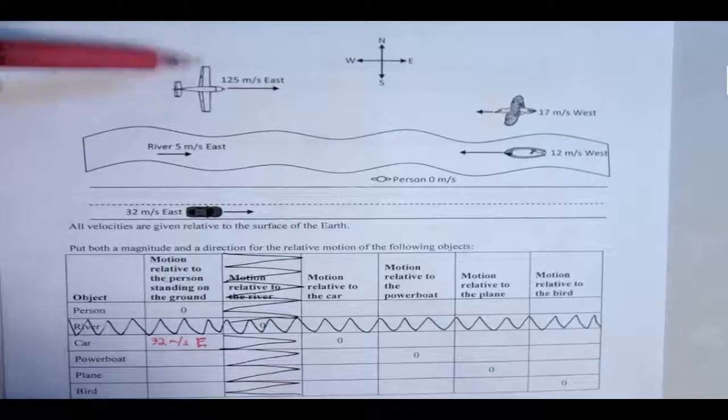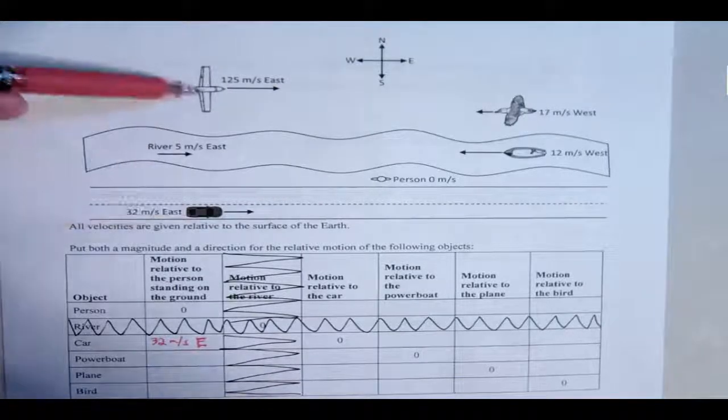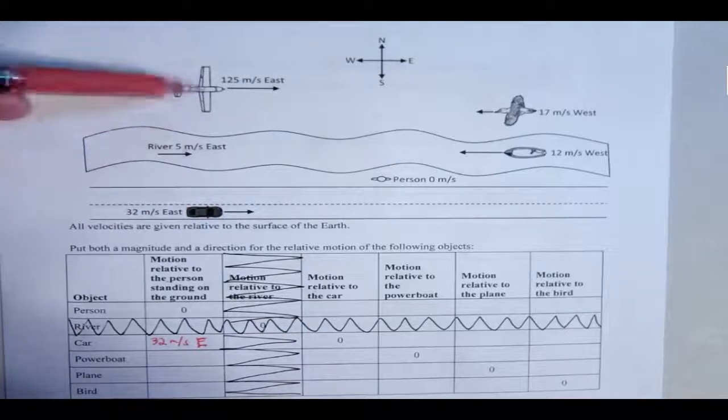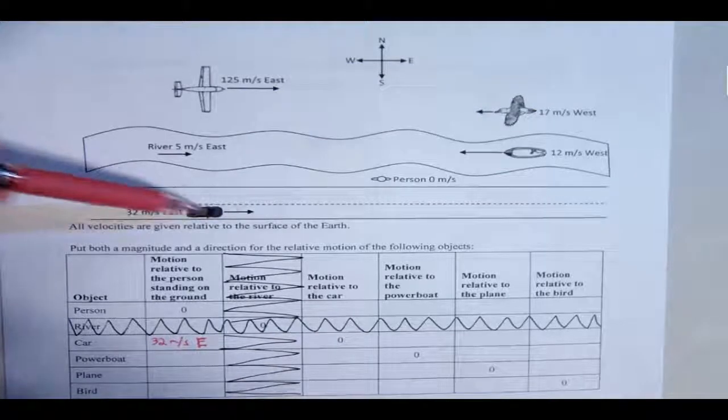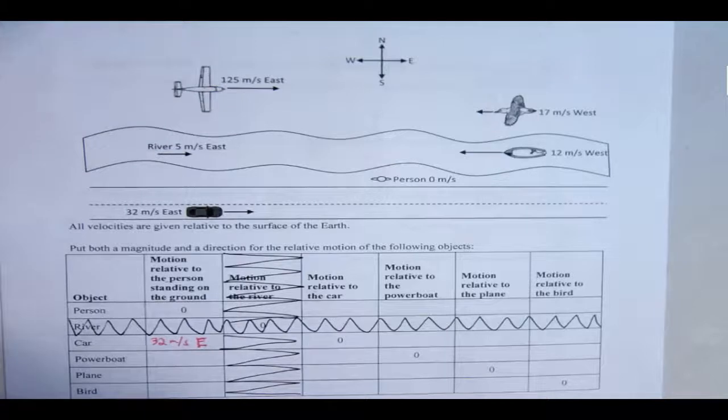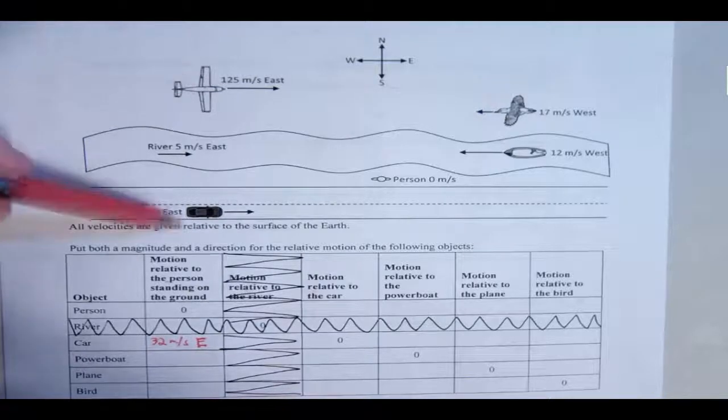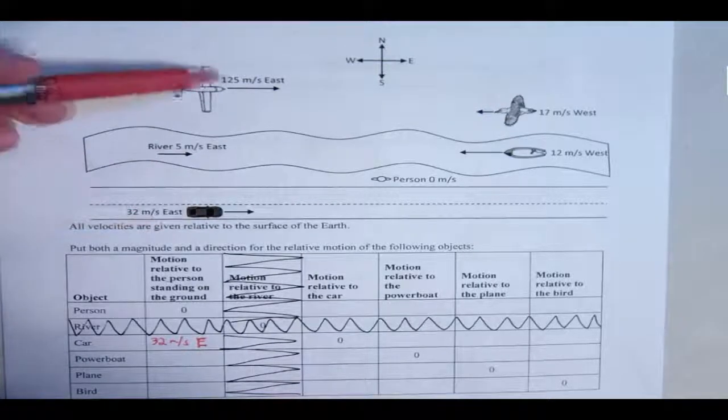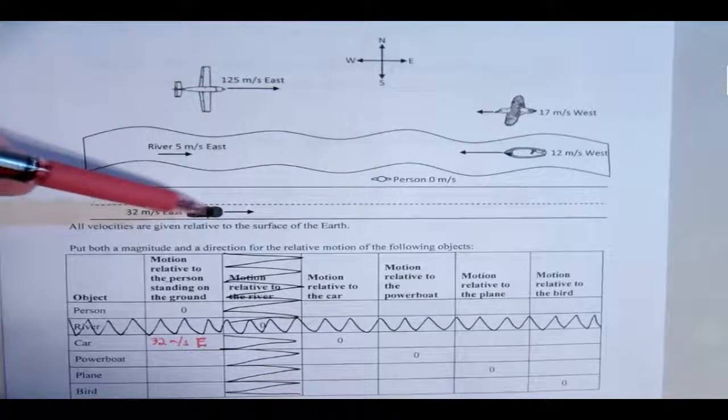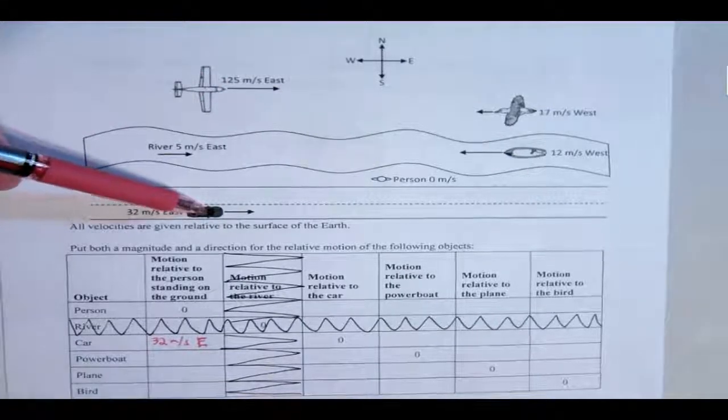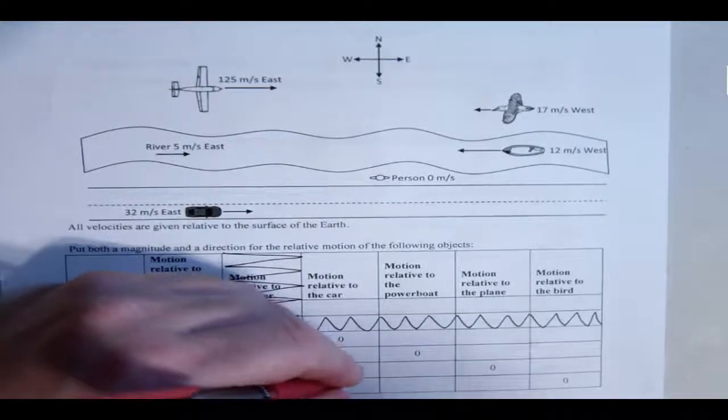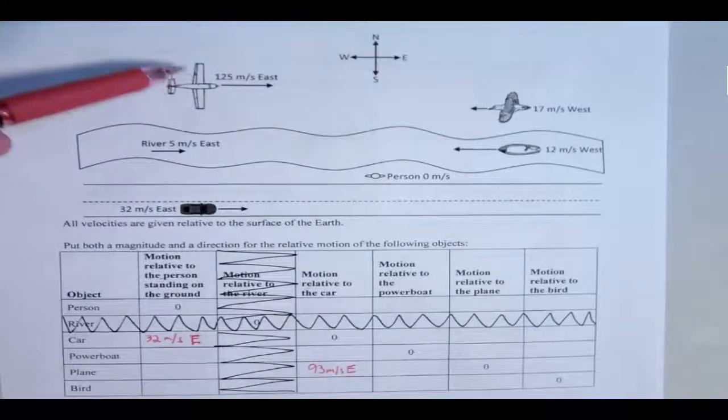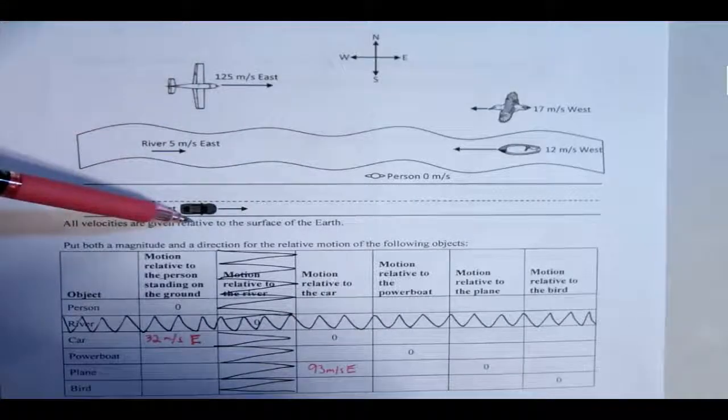Which means, will the plane look faster or slower than the car? Obviously, it's going to be faster because the number's higher, since they're going the same direction. But since the car is moving east, the plane will not look as fast as it is actually going. With that being said, they're going the same direction. We're going to subtract, since we're in the car. So we're doing 125 meters per second, minus 32 meters per second. So you should get 93 meters per second east. It's still going to look like it's going east, because it's faster than the car.